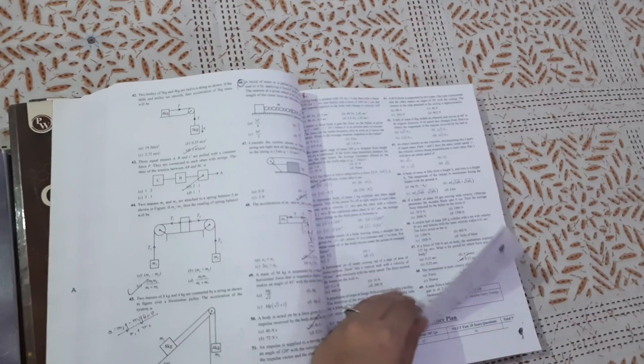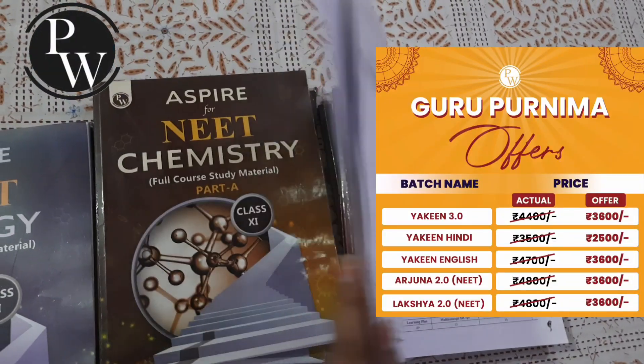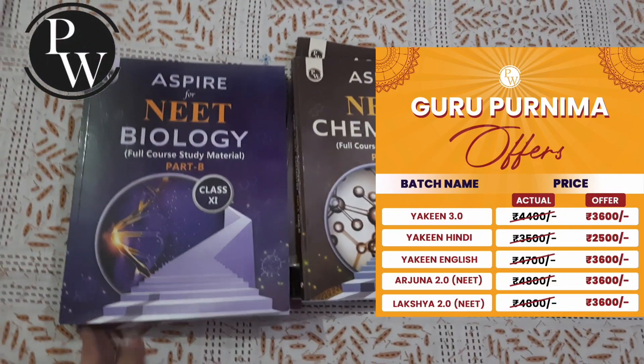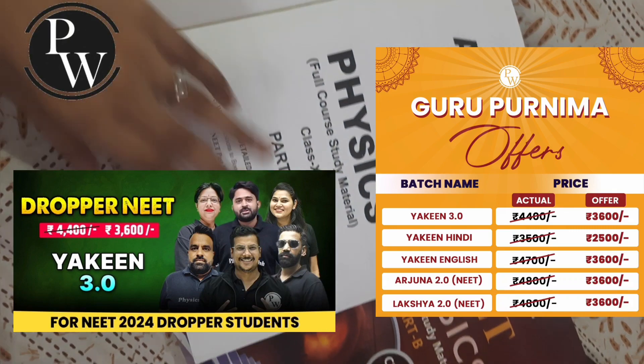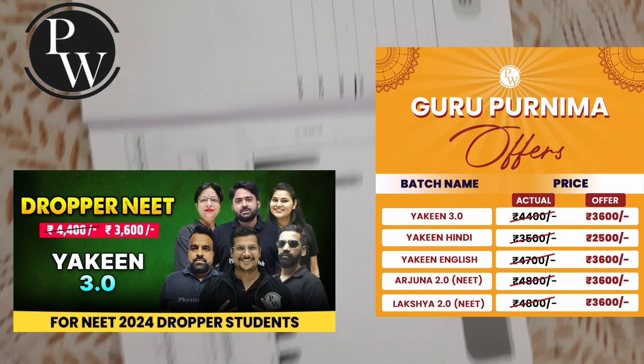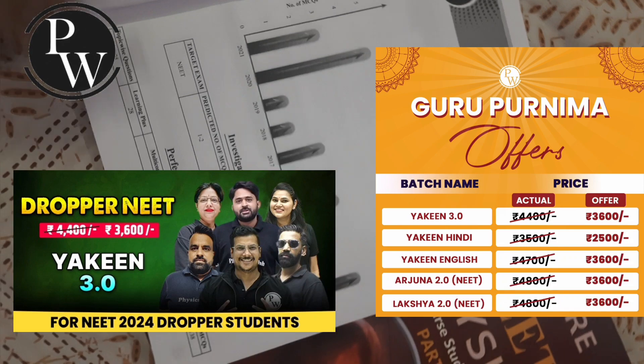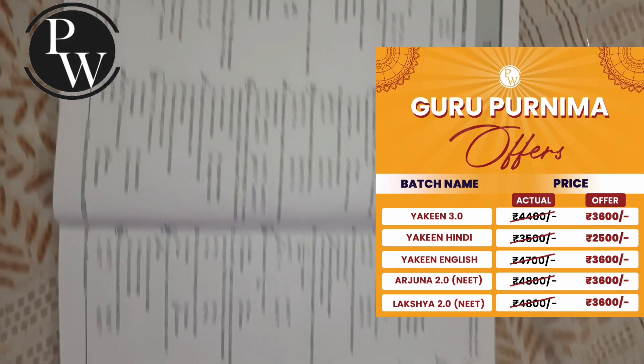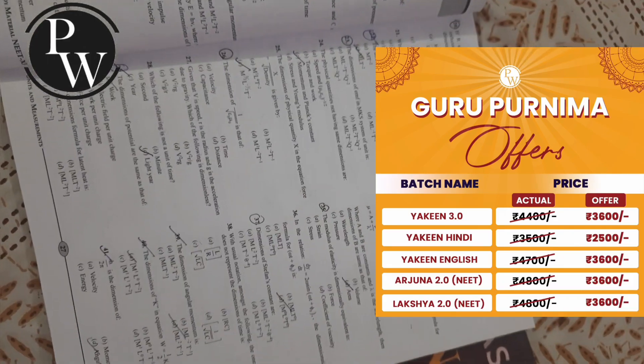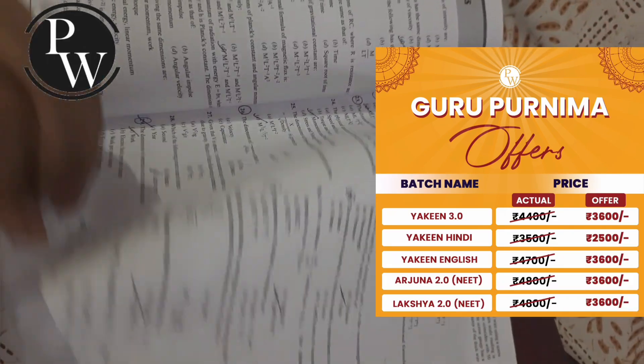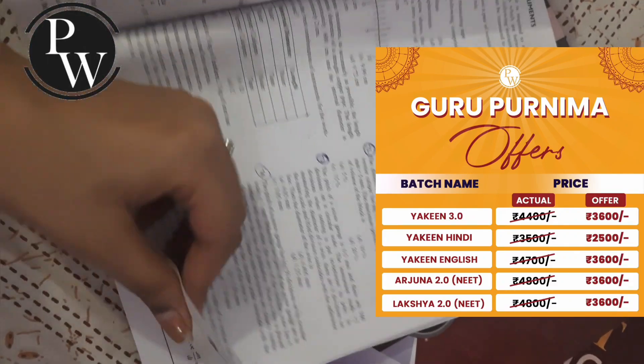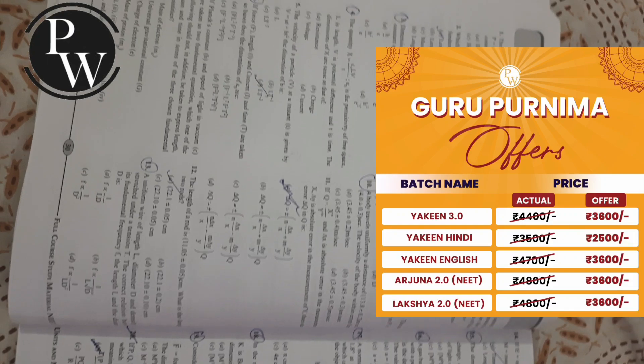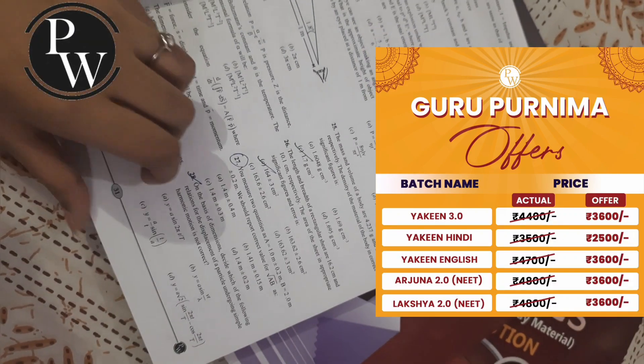Let me quickly tell you that PW is celebrating Gurupurnima Days from 3rd to 8th July, where you'll get amazing offers. You'll get Yakeen 3.0, which is a very nice dropper batch whose classes have just started, for only Rs 3,600. Arjuna 2.0 for 11th graders again for Rs 3,600. Lakshya 2.0 for 12th graders also for Rs 3,600. And if you use my coupon code, you'll also get an additional Rs 150 off. All batches are very good with top educators, DPPs, NCERT discussion, daily tests, everything.